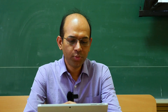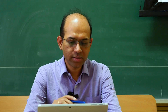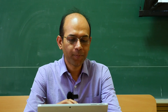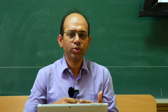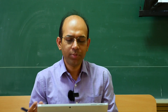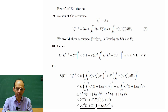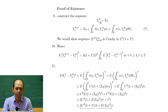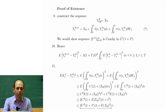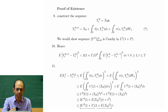Now we come to the proof of existence. For that we use Picard's iteration method. The iteration starts from 0 — say y₀ is the zeroth iteration, that is x₀. So for all t it is x₀, just a constant random variable.